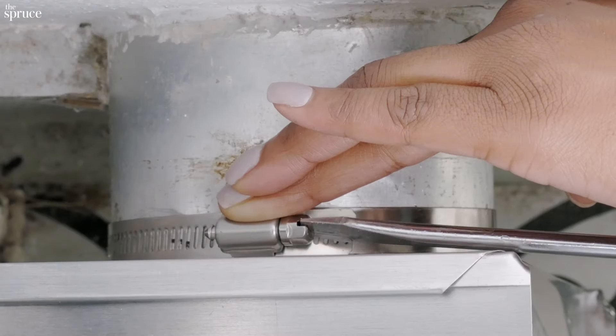Slide another hose clamp over the wall vent pipe. Now slide the dryer into place. It may take some finagling, but with some elbow grease, it shouldn't take too long.